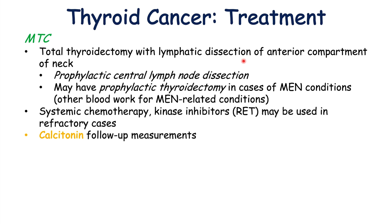Once medullary thyroid carcinoma has been treated, calcitonin follow-up measurements are important. If calcitonin levels decrease after treatment but then start to increase again over time, that could be a sign of cancer recurrence. In some cases, clinicians may also use carcinoembryonic antigen or CEA levels, which can also be helpful in following up on medullary thyroid carcinoma.